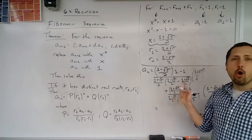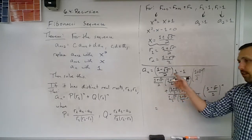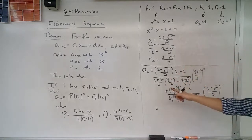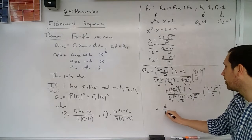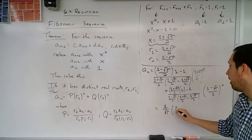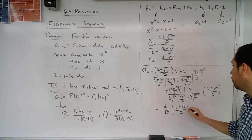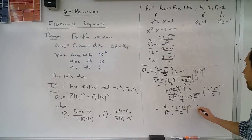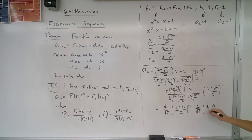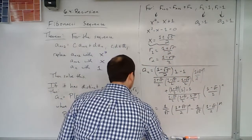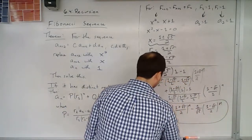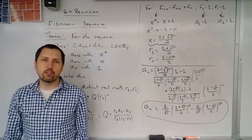Now this obviously is horrendous to look at, but this will simplify extremely nicely for us. This first term over here is going to be 1 divided by the square root of 5 times ((1 plus the square root of 5) / 2) raised to the n minus 1 divided by the square root of 5 times ((1 minus the square root of 5) / 2) raised to the n. That is the closed formula for the Fibonacci sequence.